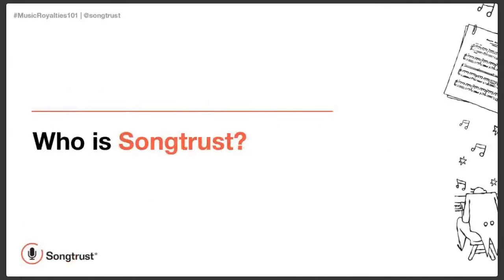A little bit of background about SongTrust. We've been around for about eight years and we're a global publishing administrator who helps any rights owners or creators access their global publishing royalties. Any song that's added into our system will be registered accurately with over 45 performance and mechanical societies around the world. It's a really great way to streamline your publishing process and save a lot of time. For those who have gone and registered songs at different societies, you know it's pretty time-consuming to do them individually. By doing them just once at SongTrust, you can make sure that you're collecting all of that global publishing royalties.